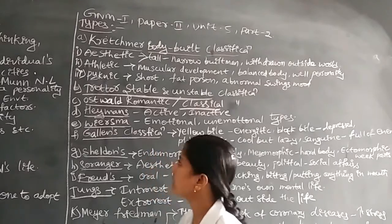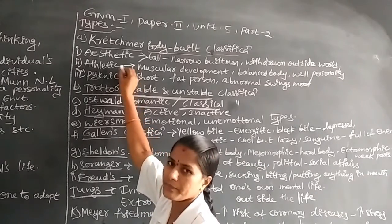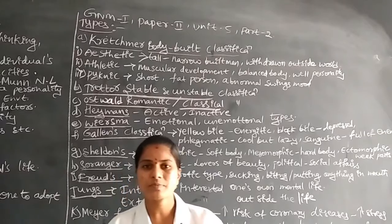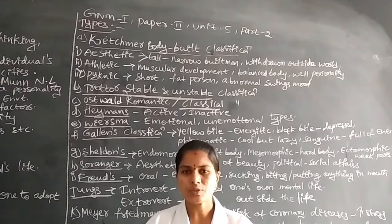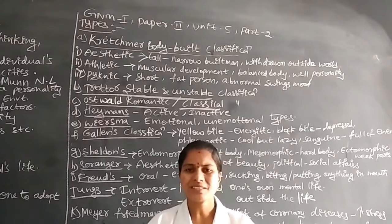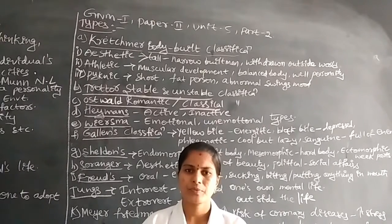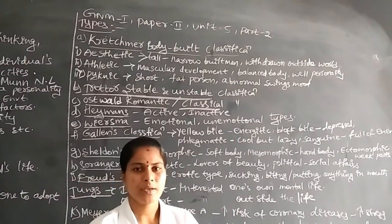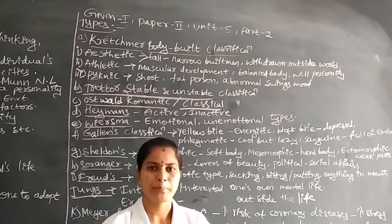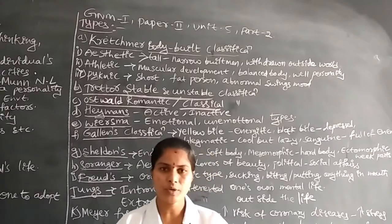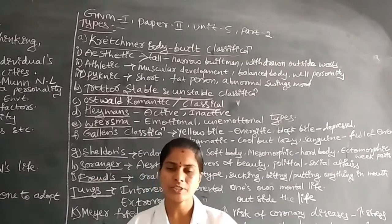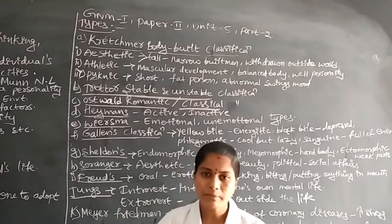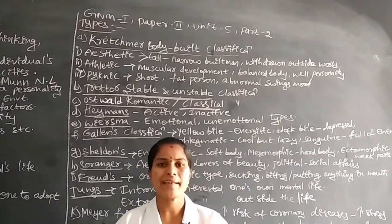Next, athletic personality. In athletic personality, the individual has normal or average muscular development. According to their height and weight, muscle strength is average. Their behavior is also balanced — they have a well-rounded personality with good thinking capacity, good intelligence, and good attitude. Their feelings are also normal. Those with athletic personality are balanced overall.